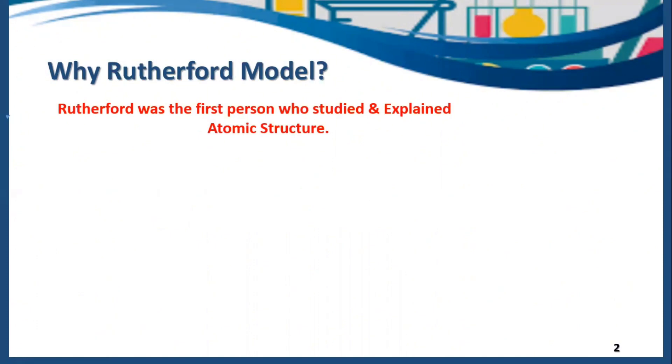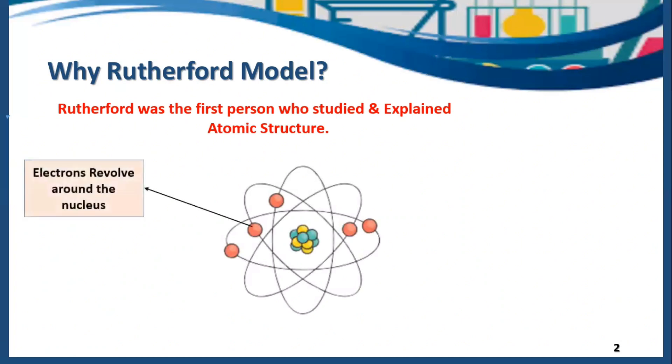He tells us about the charge distribution in an atom. Here you can see the structure of the atom. Electrons revolve around the nucleus. This is the first discovery that was done by Rutherford.